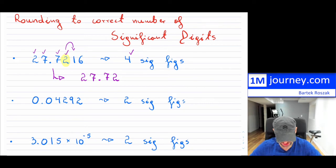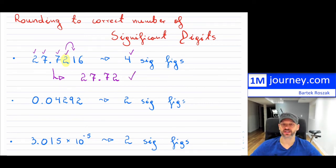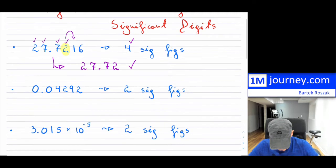So my final answer becomes 27.72, and all the other digits are dropped. Notice this now has exactly four significant digits and has been correctly rounded.